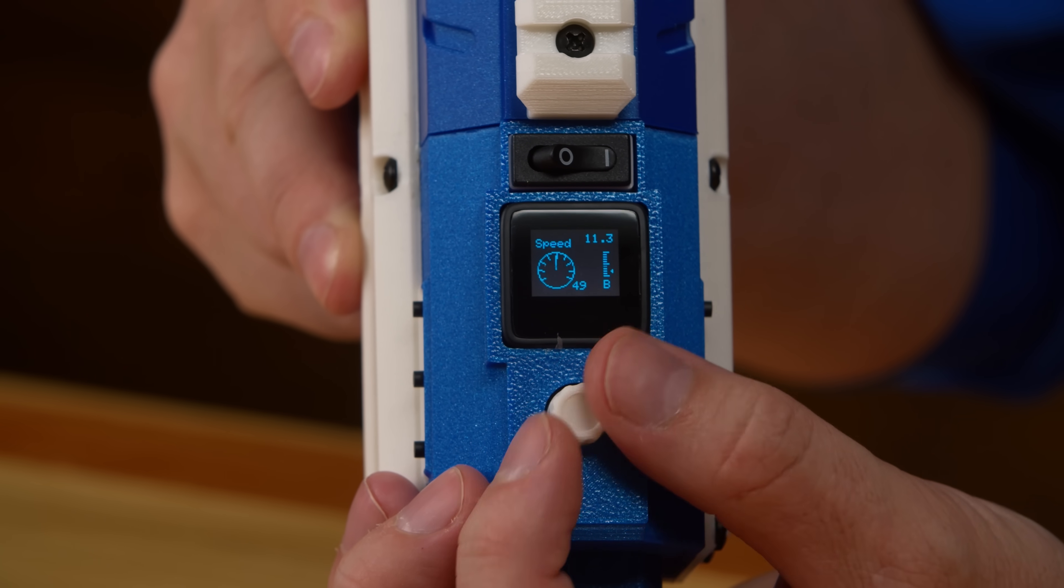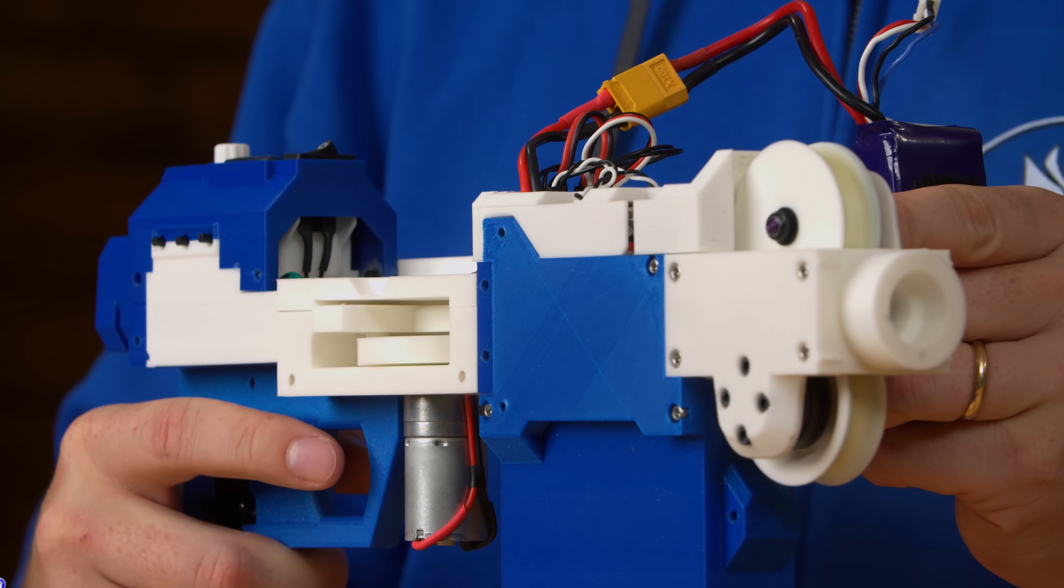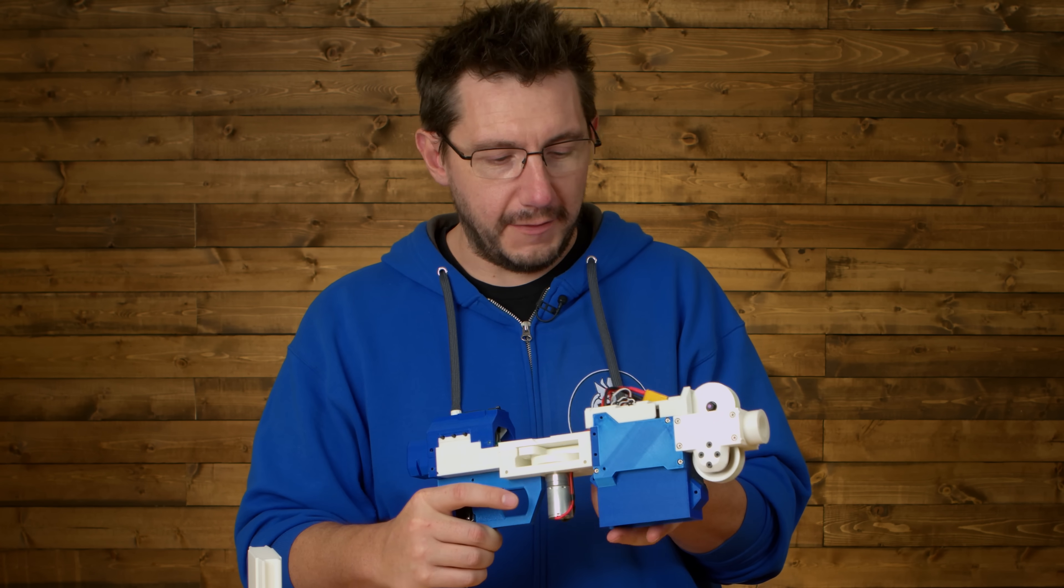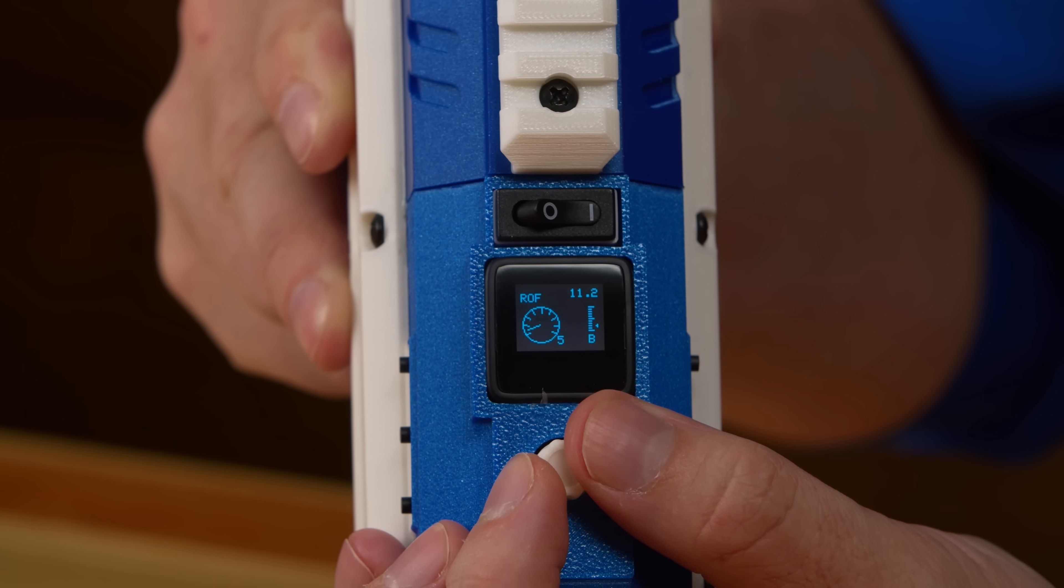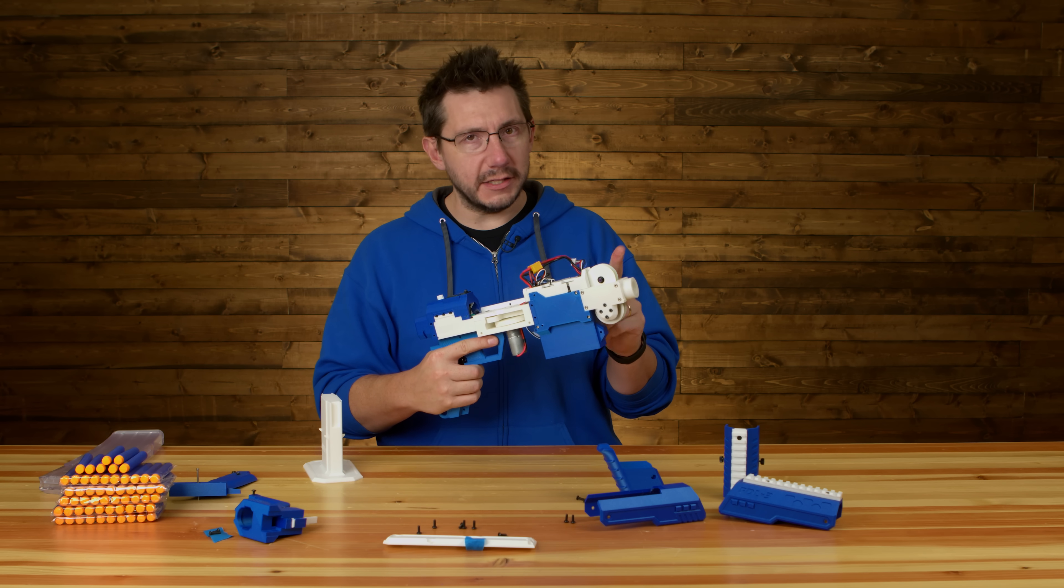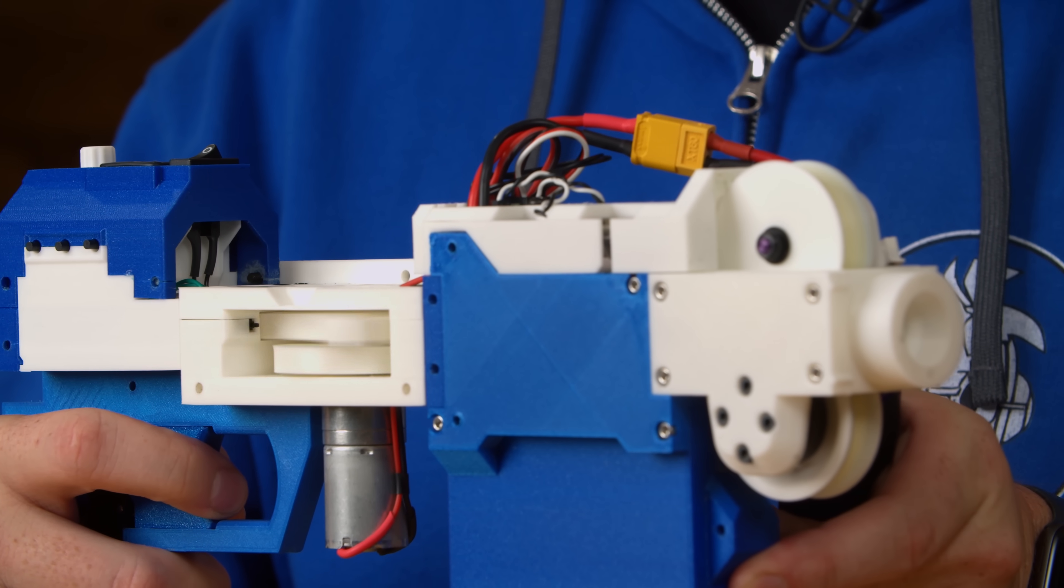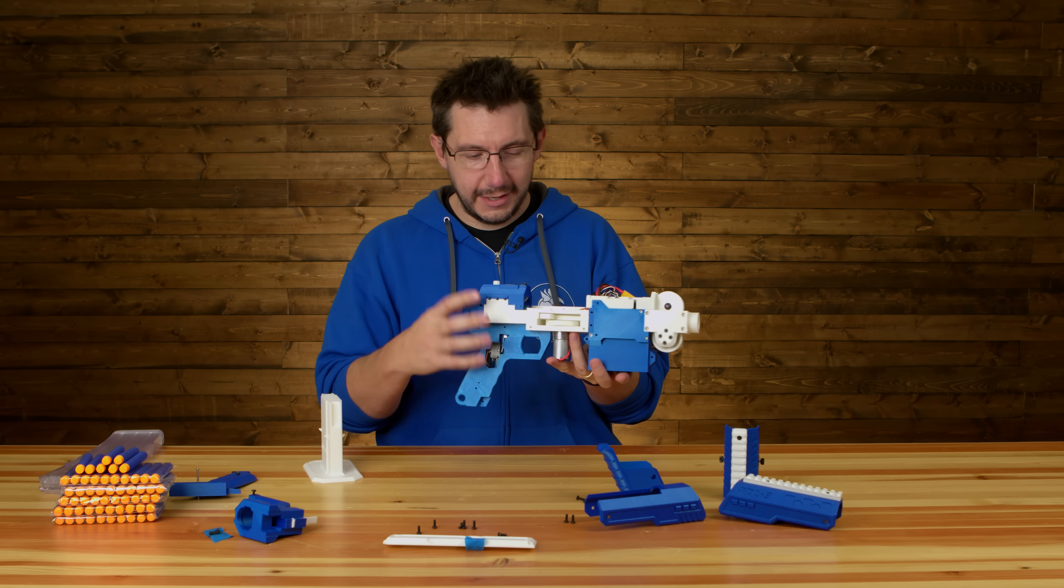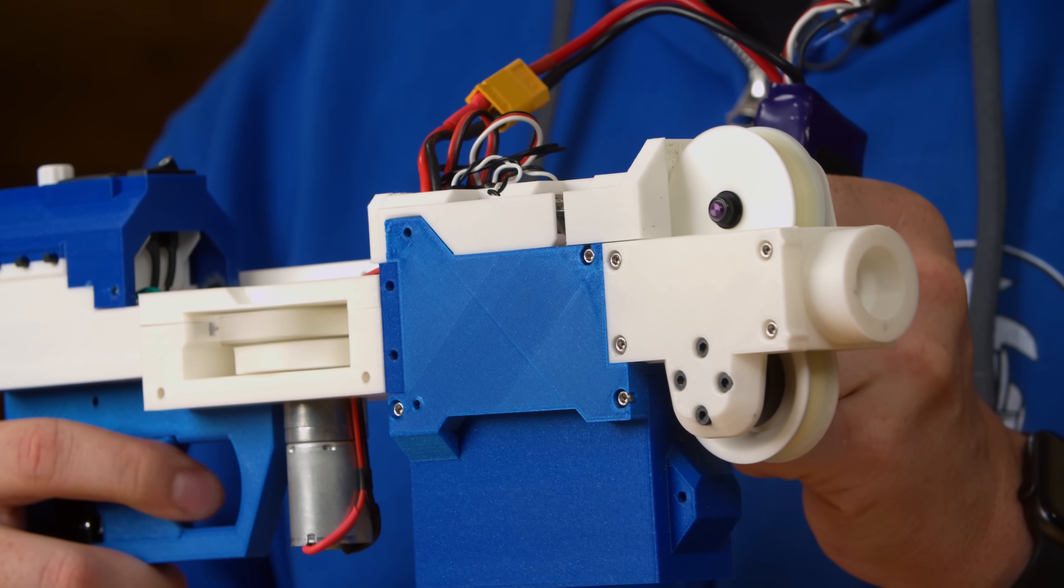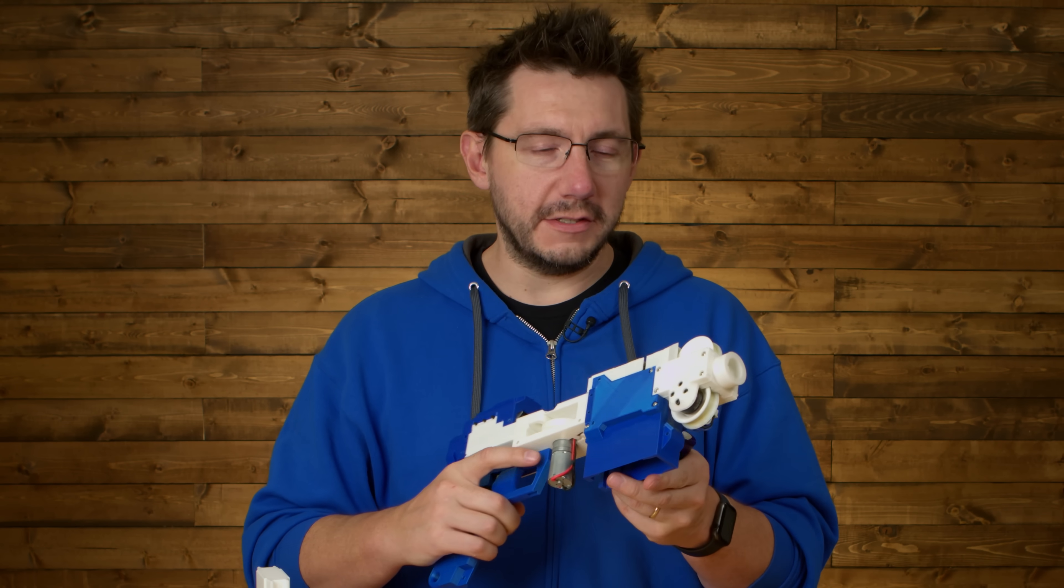The speed controls how fast these motors spin and the firing rate controls how fast the pusher operates. And so just as an example, the flywheels aren't spinning very fast. I mean, they're fast, but they're not spinning as fast as they can go and the pusher is not operating as fast as it can go. What I can do is turn up the speed of the flywheel. So the pusher will operate at the same rate of speed, but these go a little bit faster. These motors are actually drone motors and they spin ridiculously fast.